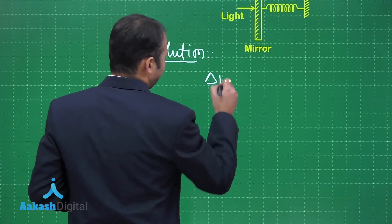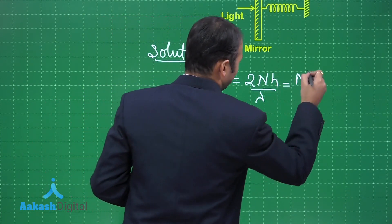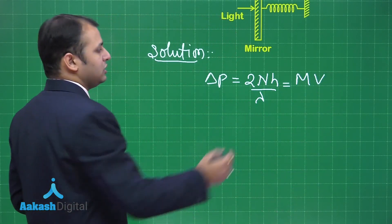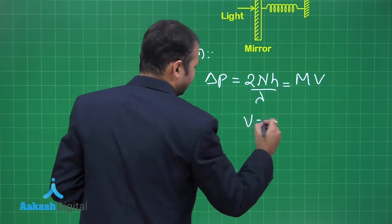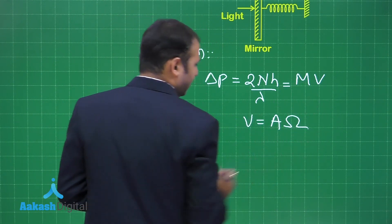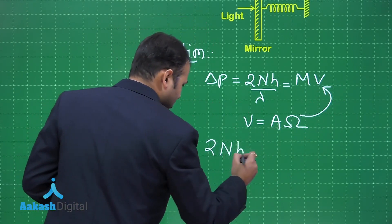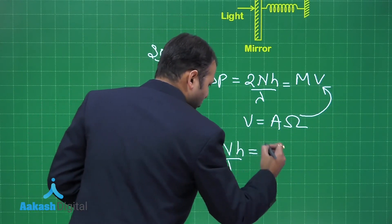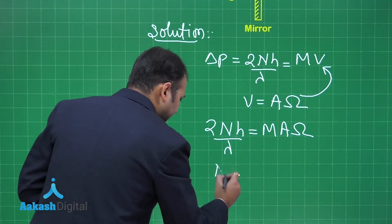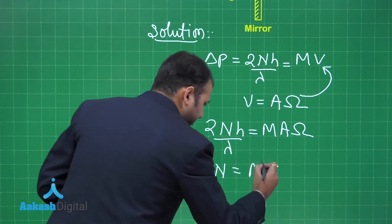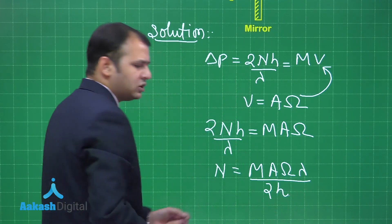By conservation of momentum, the impulse applied is delta p equals 2nh over lambda, which equals M times the velocity of the mirror. Since the mirror is performing SHM, the maximum velocity is a times omega, where a is the amplitude. Substituting this, we get 2nh over lambda equals M times a times omega. Rearranging, n equals M a omega lambda over 2h.